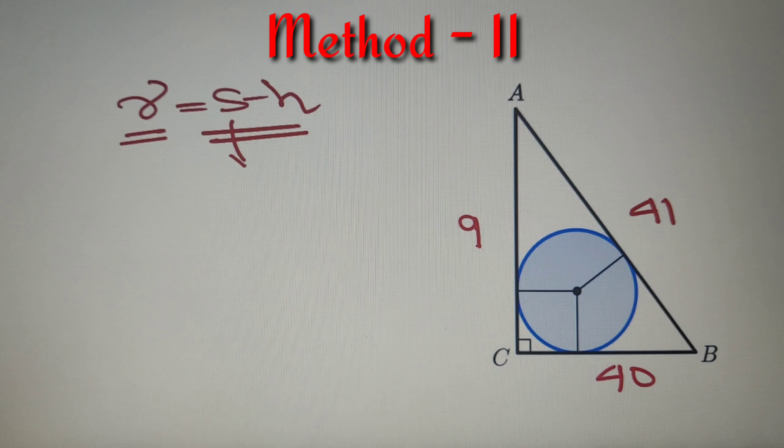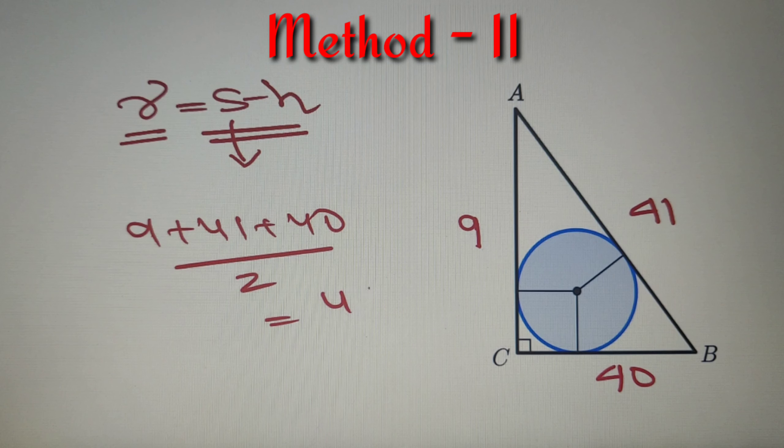Now let us first find the value of semi-perimeter which will be equal to 9 plus 41 plus 40 whole divided by 2, which is equal to 45. Now since we have got the value of semi-perimeter, I can say that R is equal to 45 minus 41, which is equal to 4 centimeter.